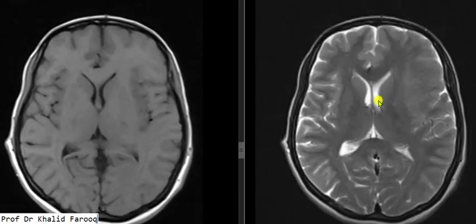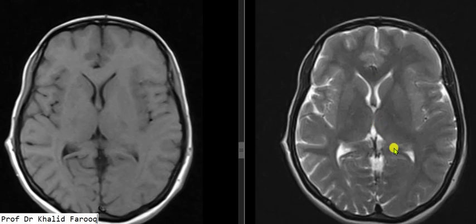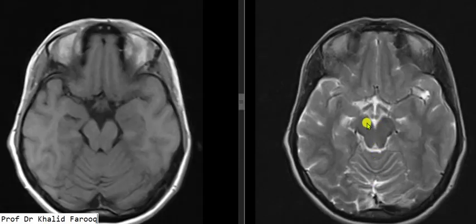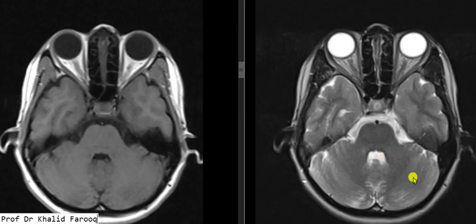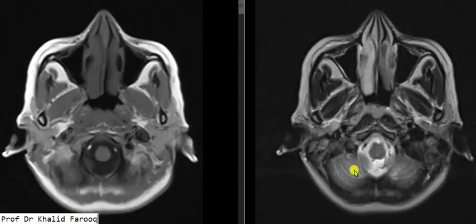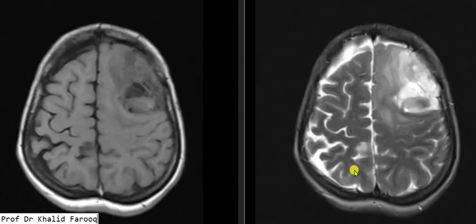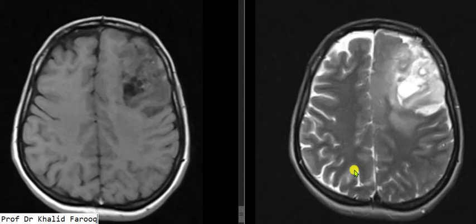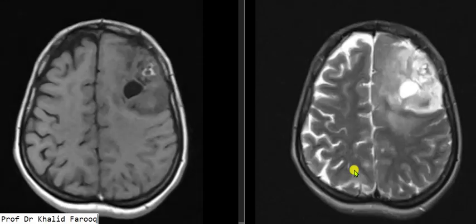The ventricular system — including the lateral ventricles, frontal horns, third ventricle, brain stem, fourth ventricle, cerebellum, and CP angles — are unremarkable. A complex mass is appreciated in the left frontal lobe. As we have only plain images, the rest of the brain is unremarkable.